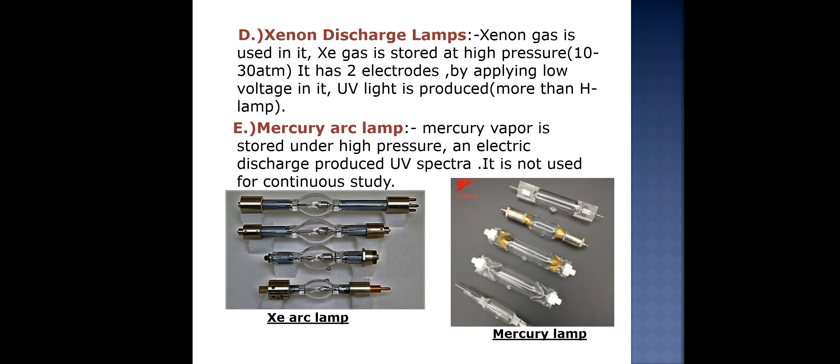The fourth lamp is the xenon discharge lamp, in which xenon gas is stored at high temperature under 10 to 30 atmospheric pressure. It consists of two electrodes, and by applying low voltage, UV light is produced which is of greater intensity than the hydrogen lamp.